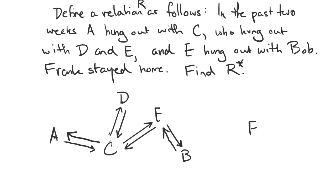So we're trying to find the transitive closure. So now I'm going to include the R² pairs. So since Alice hung out with Carlos, and Carlos hung out with Derek, that means that Derek and Alice are connected in R². Likewise, Derek and Erica are connected in R². So are Carlos and Bob. Frank gets no additional arrows.